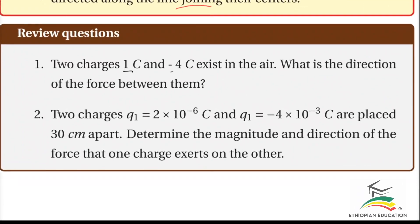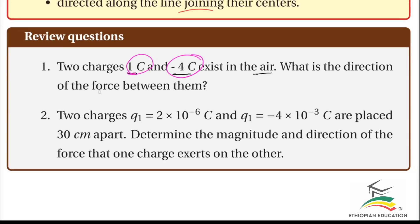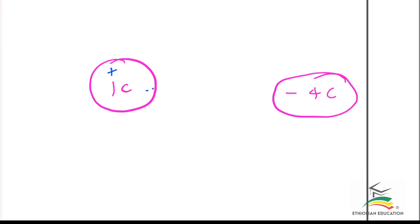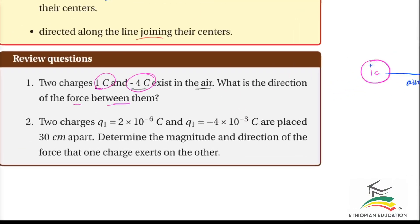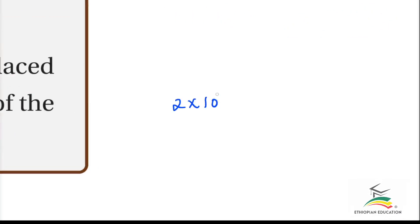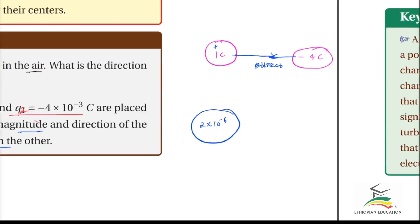Two charges — one charge of 2 times 10 to the power of minus 6 coulombs and a second charge of negative 4 times 10 to the power of minus 3 coulombs — exist in air, separated by 3 centimeters, which is 0.3 meters or 3 times 10 to the power of minus 1 meter. Determine the magnitude and direction of the force that one charge exerts on the other.